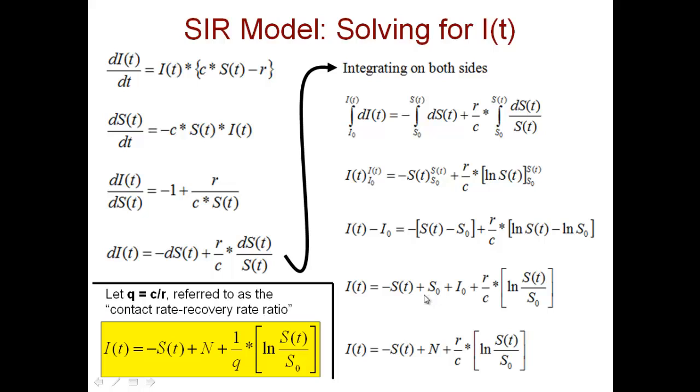So now we know also S(0) plus I₀ equals N. We are assuming again there are no recovered people at time 0. So I(t) equals minus S(t) plus N plus r over c times log of S(t) over S₀.